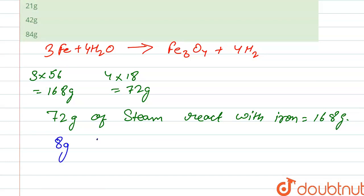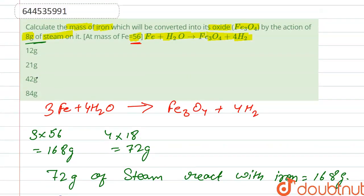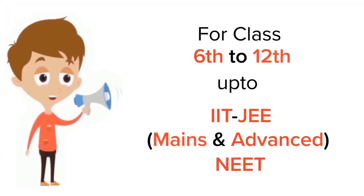8 grams of steam react with iron, so it is calculated as 168 into 8 divided by 72, that gives us 21 grams. So our correct option is option 2nd. Thank you.